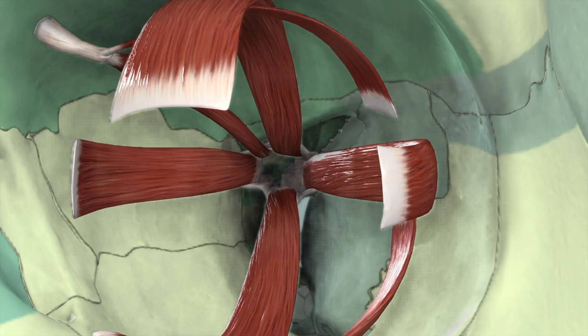The tendinous ring provides the common origin of the four recti muscles of the eyeball and extends across the fissure to gain attachment to the undersurface of the lesser wing around the upper and medial margins of the optic foramen. This tendinous ring divides the superior orbital fissure into three compartments: a lateral compartment, an intermediate compartment, and a medial compartment.